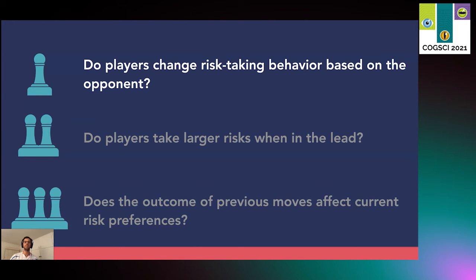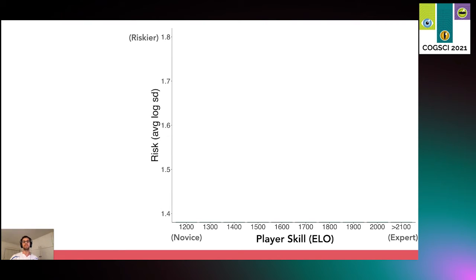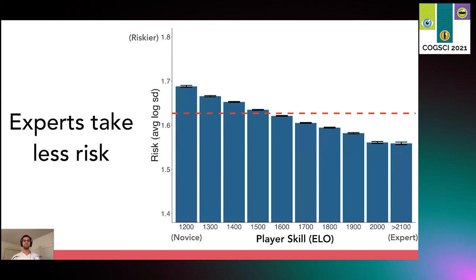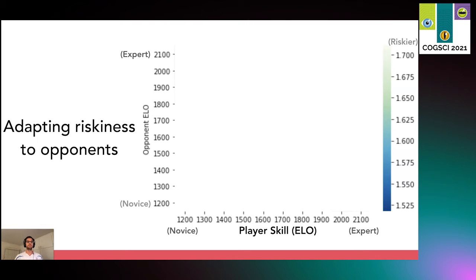First, we ask whether the skill of the player and their opponent influences their risk preference. This graph shows the mean log risk on the y-axis and the binned player skill level on the x-axis. Player skill is calculated using a zero-sum scoring system called ELO, which is very popular for other sports and games. Novices have an ELO below 1200 and players above 2000 are considered very skilled. We see that, on average, weaker players consistently play riskier than experts, with the average across all groups shown in a red line. So we saw that experts play more risk-averse, but a unique aspect of risk-taking in adversarial games is that strategy might change depending on who they're playing.